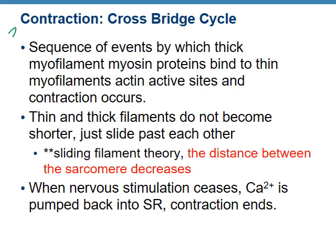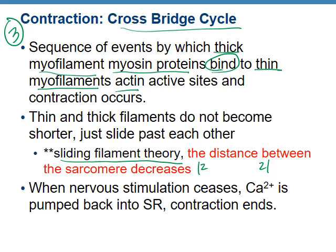On to phase three: contraction, called the cross-bridge cycle. Revisiting sliding filament theory — the distance between Z-discs decreases. The thick myofilament myosin protein binds to the thin myofilament actin active sites, and contraction occurs. The thin myofilament slides over the thick myofilament.